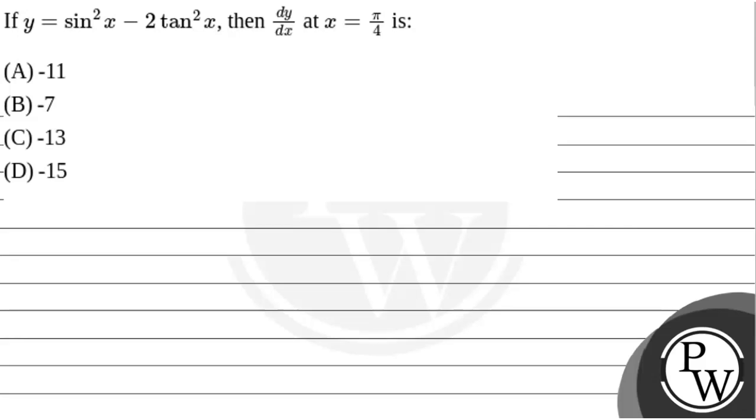Hello Vancho, let's read the question. The question made, why can't the expression given? That is, y equals to sin squared x minus 2 tan squared x. We're finding dy/dx at x equals to π/4.